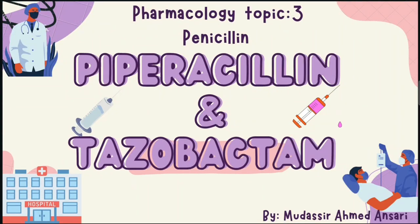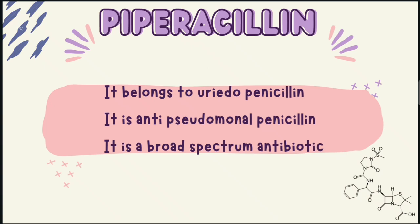Hello friends, today is our last lecture on penicillin and in this video we will see about piperacillin and tazobactam. Piperacillin is a beta-lactam antibiotic. As we all know, it consists of a beta-lactam ring present in its structure. It belongs to ureidopenicillin. The penicillin which contains ureido groups are called ureidopenicillin.